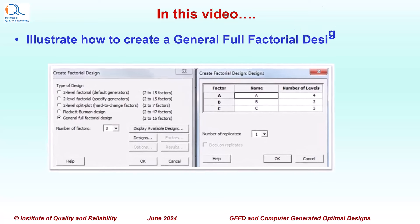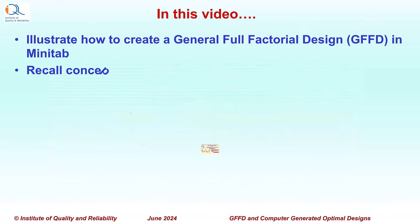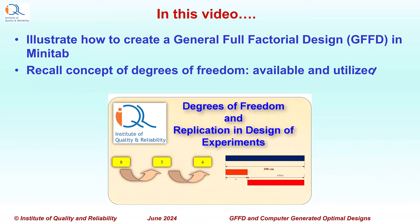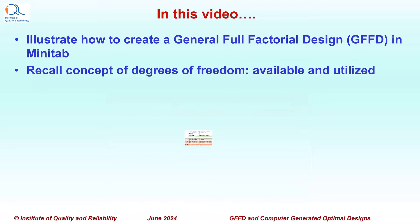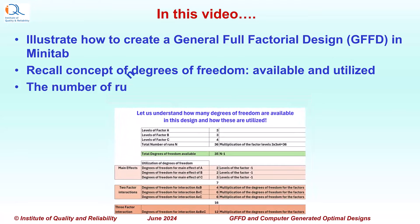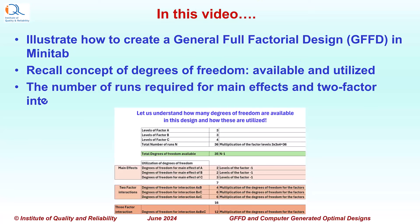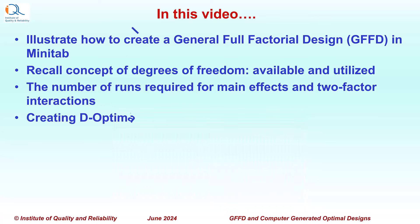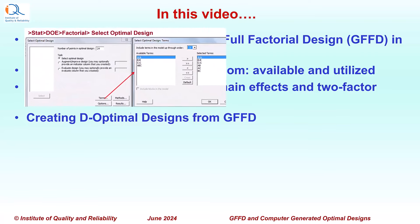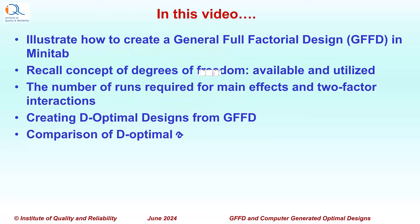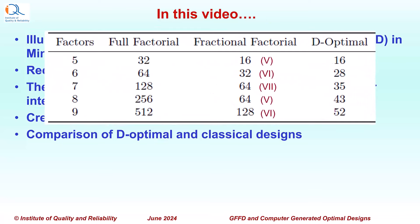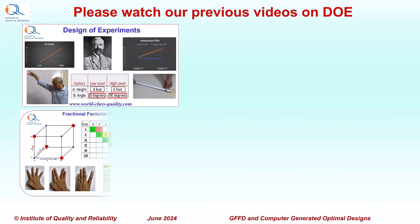In this video, we will illustrate how to create a General Full Factorial Design in Minitab. We will then recall the concept of degrees of freedom, the available degrees of freedom and how these are utilized in an experimental design, the number of runs required for main effects and two-factor interactions, creating D-optimal designs from General Full Factorial Designs in Minitab, and comparison of D-optimal and classical designs. It is better that you watch our previous videos on Design of Experiment if you are not familiar with the concepts.